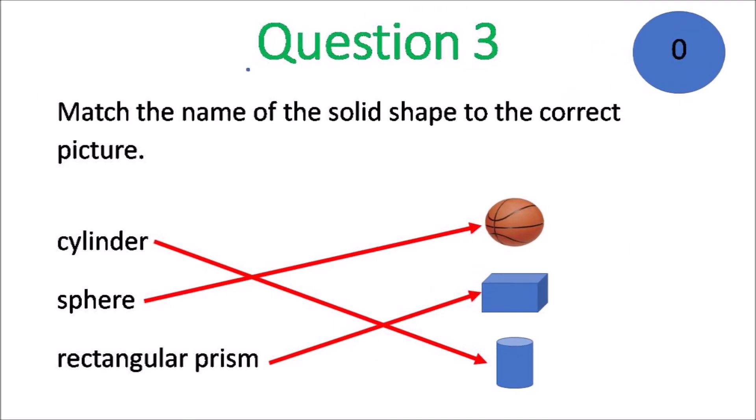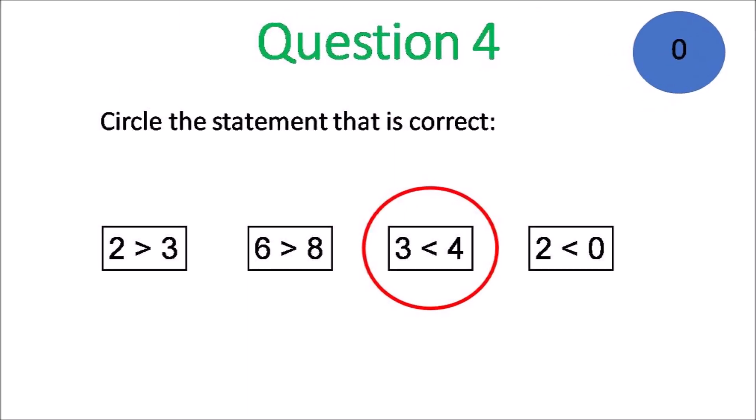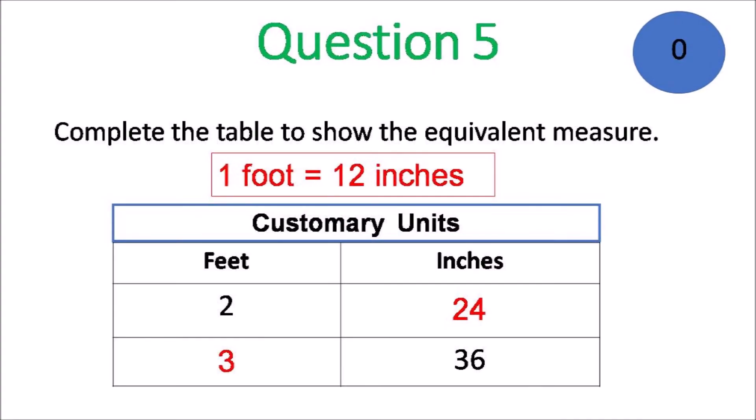And you match cylinder to cylinder, sphere as well, rectangular prism to the box. Question 4. The statement that is true. Look for one that points to the smallest number that's 3 is less than 4. One foot is 12 inches so 2 feet 24 and 36 inches is 3 feet.